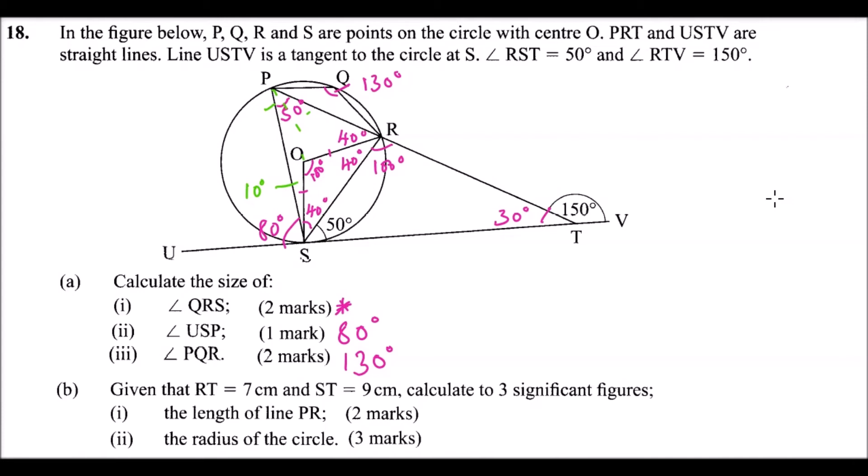Part B of this question, given that RT is 7, so this is 7 cm, and ST is 9 cm, calculate to 3 significant figures the length of PR. So this is our PR. So if we say, let's say our PR, if we put it, it is X. If you multiply, TR multiplied by TP should be equals to TS squared.